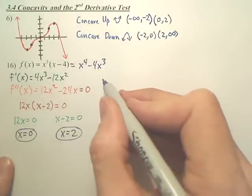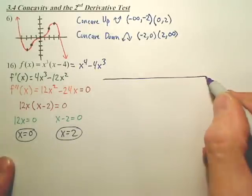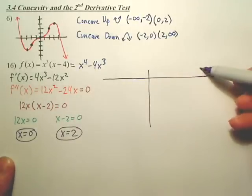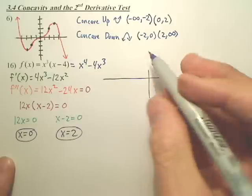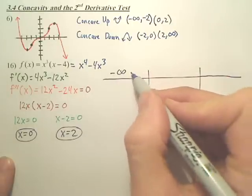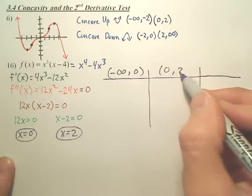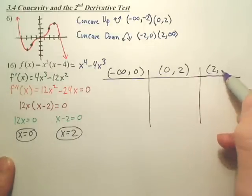So, how do we check to see if they actually change concavity? We make a table, kind of like with first derivatives. These are your intervals. So, you go from negative infinity to 0, from 0 to 2, from 2 to infinity.